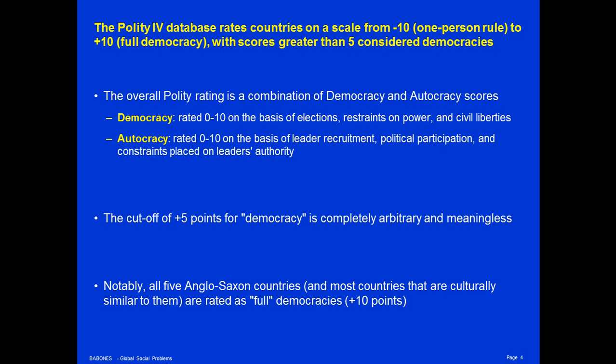So a country that has a rating of 0 for democracy and a rating of 10 for autocracy would get a total rating of negative 10 — full autocracy. On the other hand, a country that has a rating of 10 for democracy but 0 for autocracy would get a rating of positive 10 — full democracy. On this scale from negative 10 to positive 10, Polity uses a cutoff of 5 points for democracy. Anything more than 5 points is a democracy; anything less than 5 points is not.